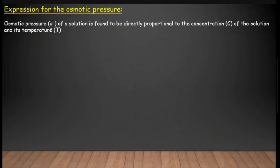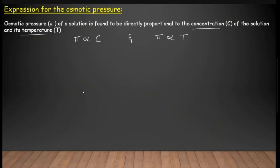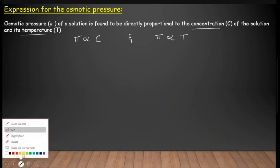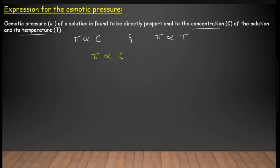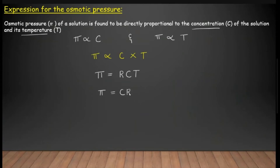There is an expression to find out osmotic pressure. Osmotic pressure is represented by π and is found to be directly proportional to the concentration of the solution, and also directly proportional to temperature. Mathematically: π ∝ C and π ∝ T. Together, π ∝ CT, and removing the proportionality sign: π = CRT, or written as π = CRT.